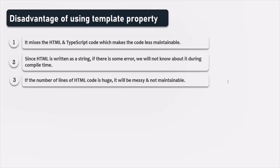That's why I always prefer to use the templateUrl property for creating the view template for my components — even if the HTML code is only one or two lines. I prefer templateUrl because in that way I am separating my HTML code from my TypeScript code. So in this lecture we learned what a view template is and how to create one — either using the template property or the templateUrl property of the @Component decorator. In the next lecture, let's learn how we can style the view template of our component.